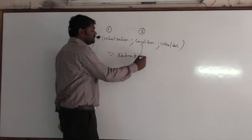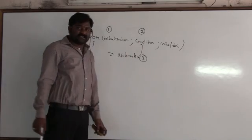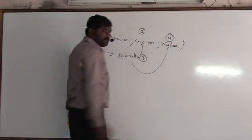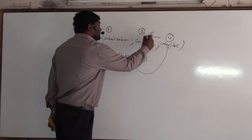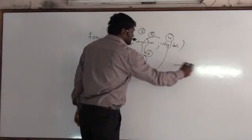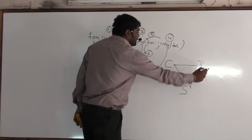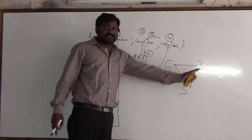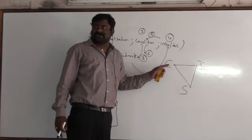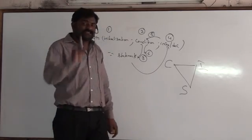The third one is statements. First it will check initialization, next is condition, then statements, then increment or decrement, then condition, then statements — and this repeats. Until the condition is satisfied, the loop will get repeated again and again.